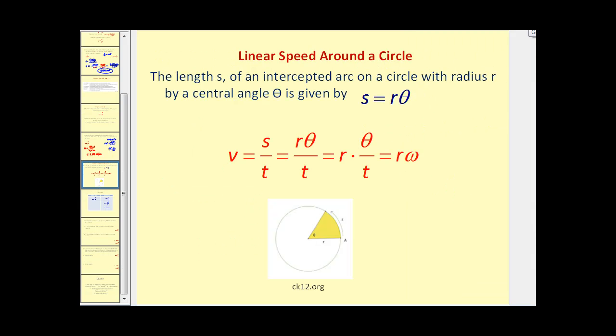Let's go back to linear speed and talk about how to find it around a circle. Remember the formula for arc length is s equals r theta. If we go back to our linear velocity formula we replace our distance s with r times theta. And if we wanted to we could rewrite this as r times theta divided by t. And theta divided by t is actually our angular velocity or omega.